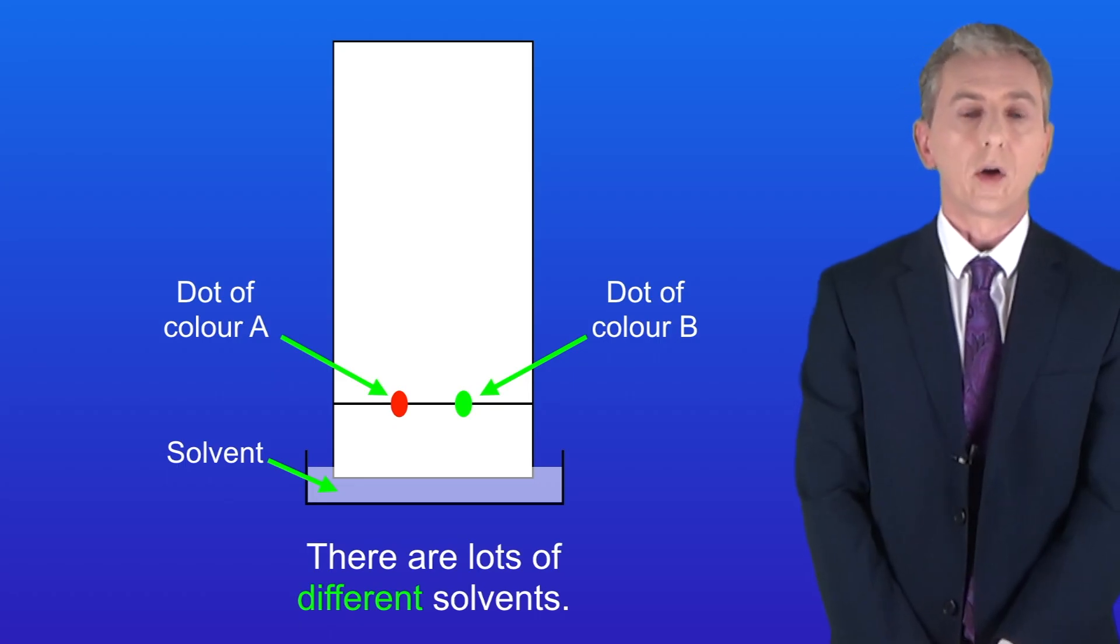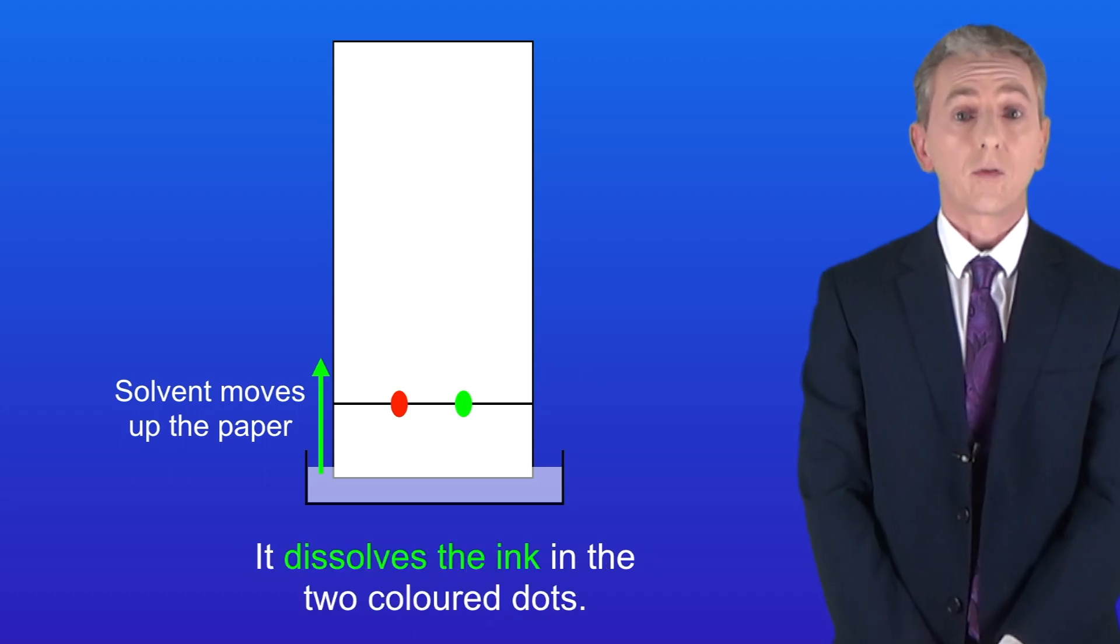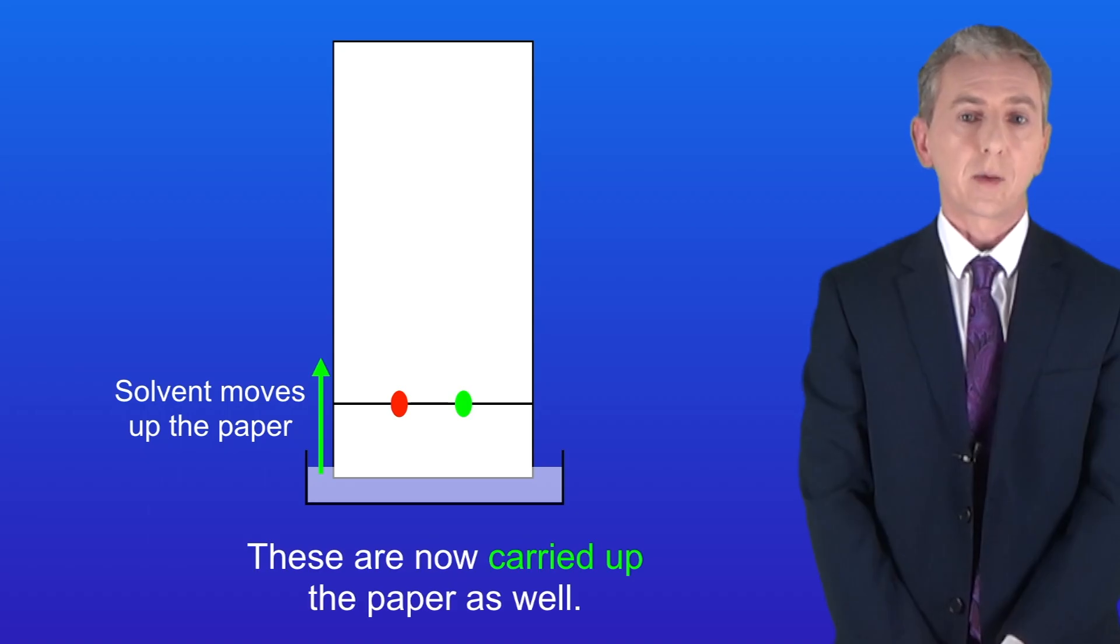Now here's a really important part. The solvent now makes its way up the paper and it dissolves the ink in the two coloured dots and these are now carried up the paper as well.